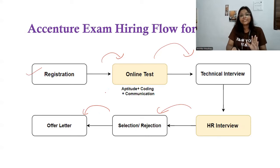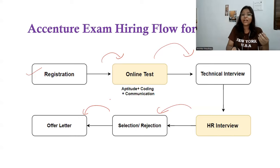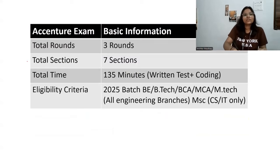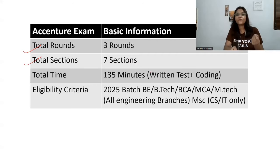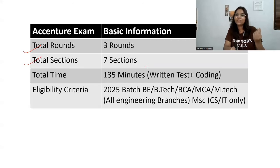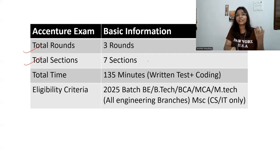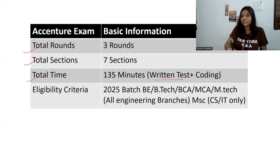Let's understand what will happen in the online test — the sections, how many rounds there will be. There will be three rounds: first is online written test, second is communication assessment which is not an elimination round, and third is the interview. There will be seven sections — from aptitude there will be reasoning with two sections: abstract and critical — and verbal abilities, pseudo codes, computer network security, and such subjects.